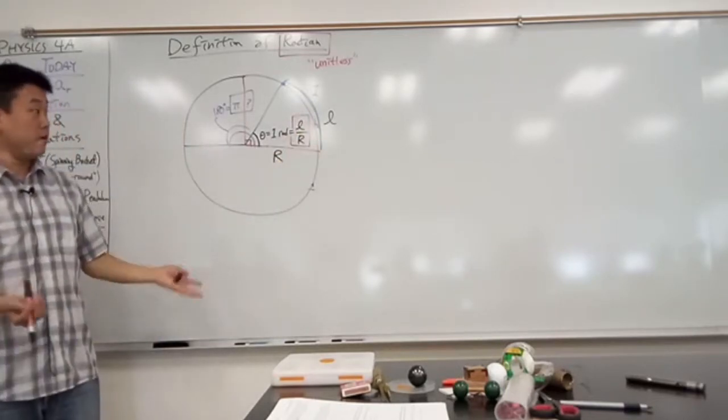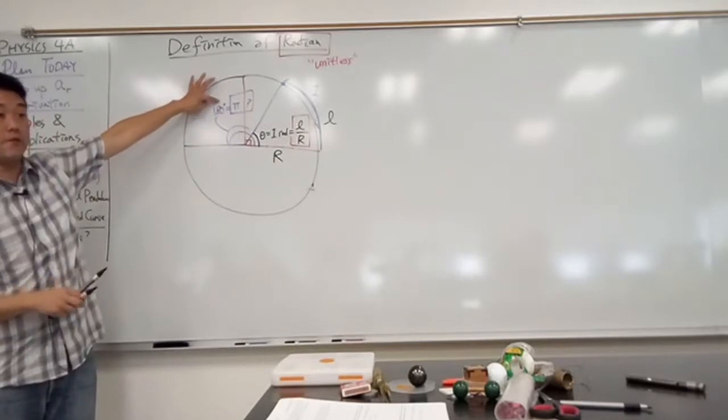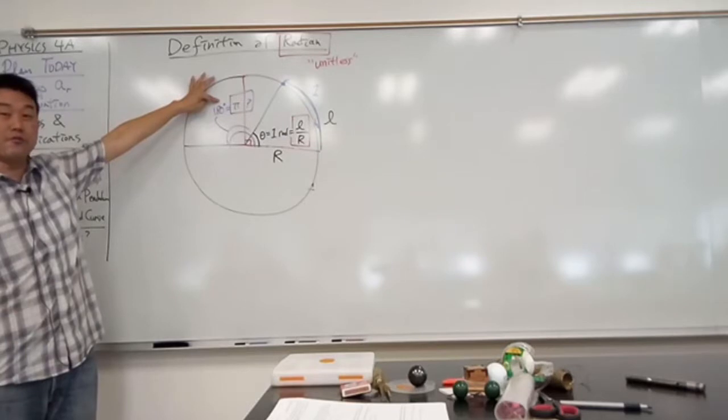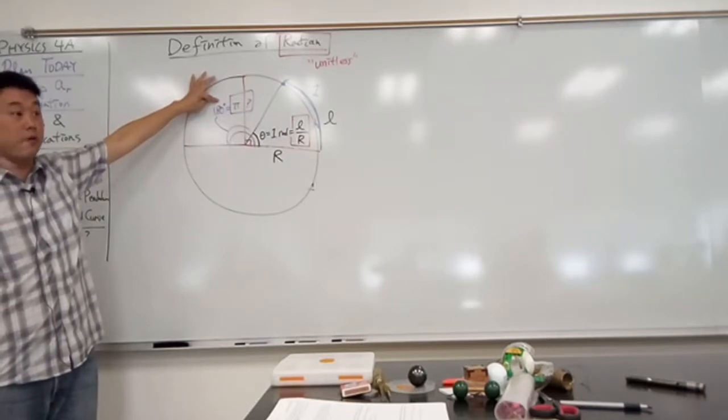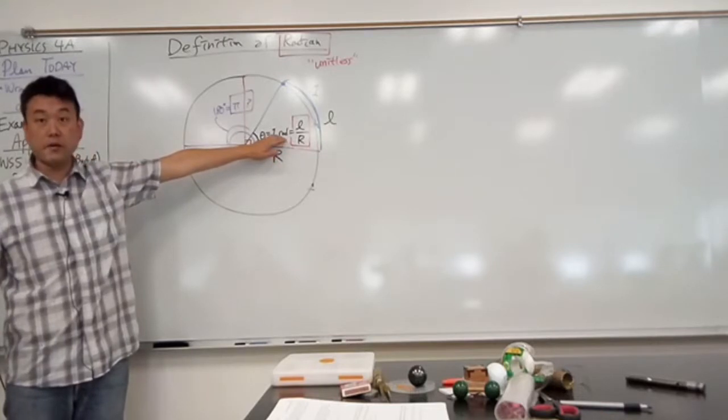This is in contrast with degrees. With degrees, if you ever omit the word degree, whatever it is you wrote down would just be wrong. Because you have no reference. But with radian, that's what makes radian non-arbitrary.